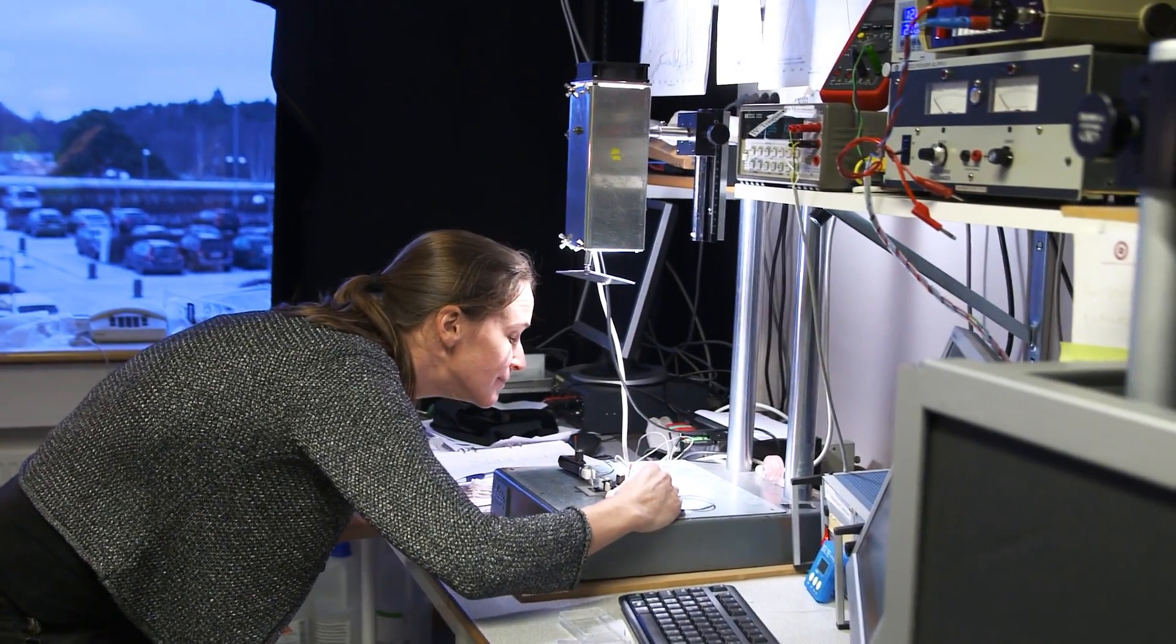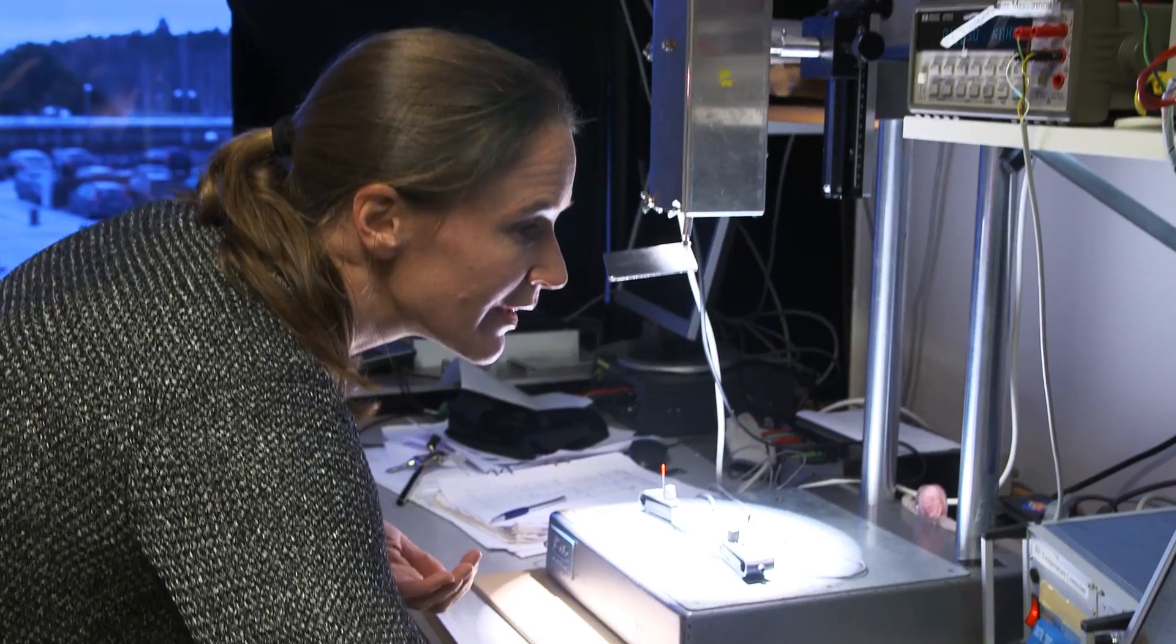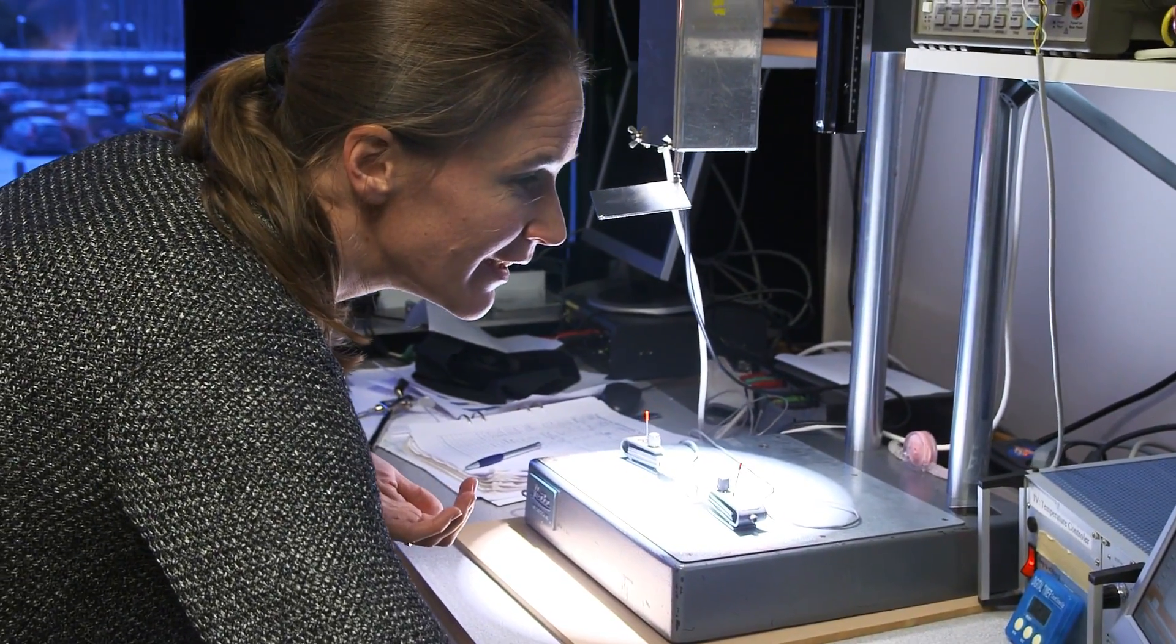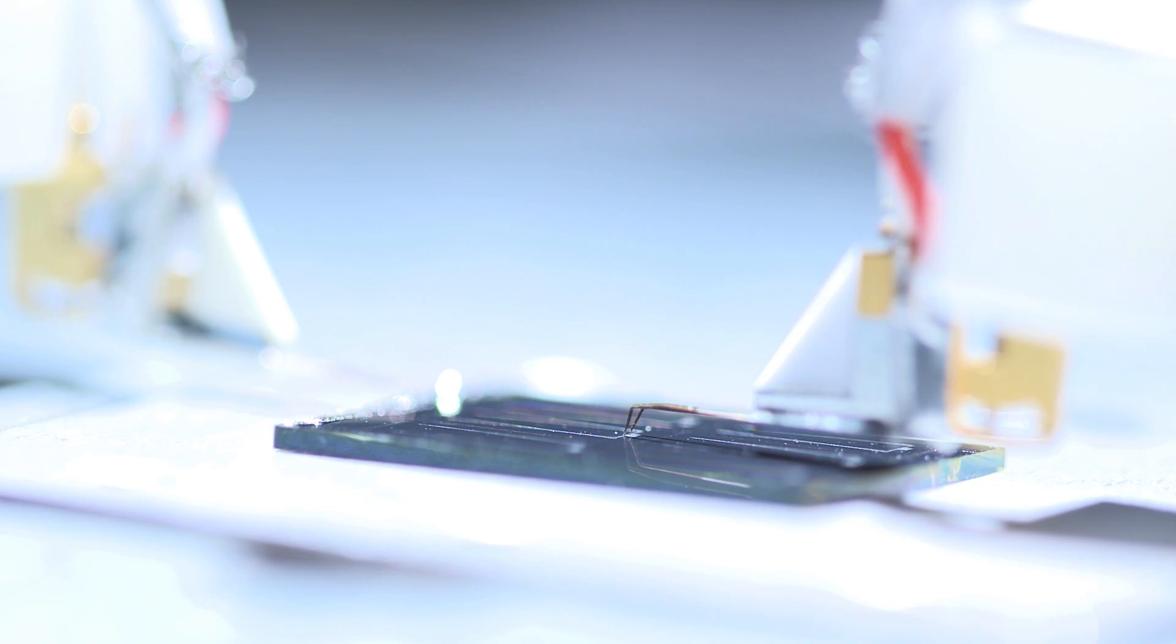So far, Charlotte's environmentally friendly thin film solar cells have managed to convert nearly one tenth of the sun's energy into electricity. But to really succeed, they will have to double this number.